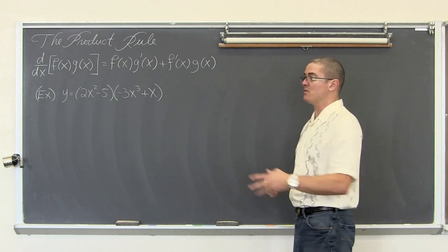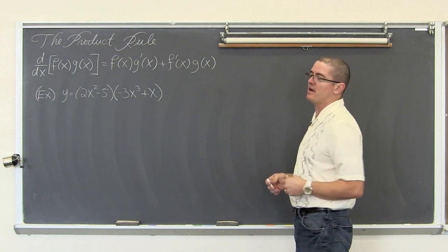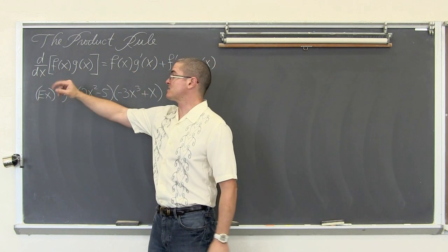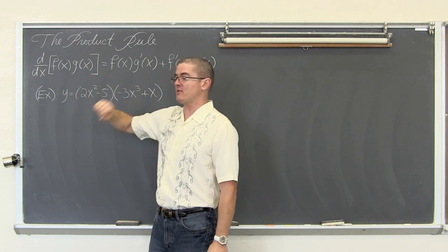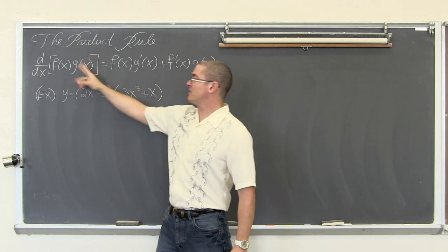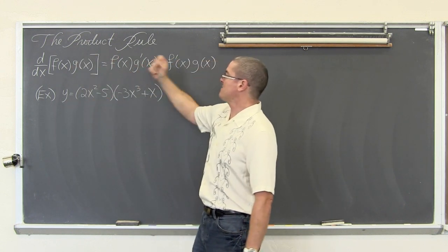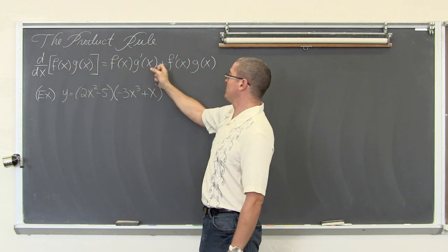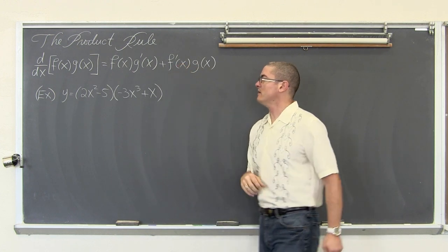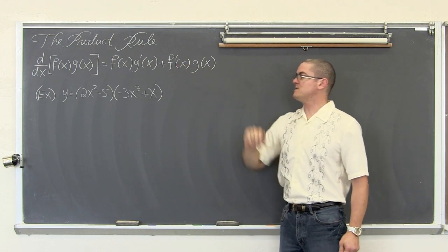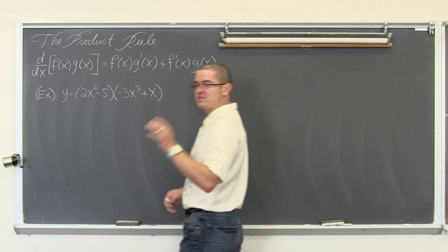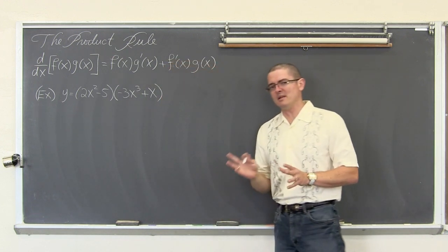One of them, the one in this video, is going to be called the product rule. When you want to find the derivative with respect to x of two functions multiplied together, it is equal to the first function times the derivative of the second function, plus the derivative of the first function times the second function. So we are going to have five examples and you will see that it can be a little bit tedious.